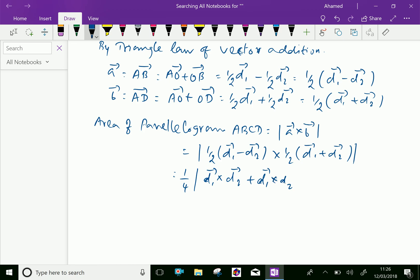This is vector D1 cross D2 plus D1 cross D2, then D1 cross D1, then D1 cross D2, then minus D2 vector cross D1, minus D2 vector cross D2 vector modulus.